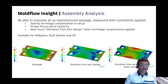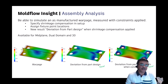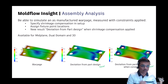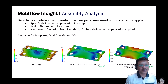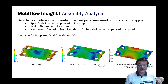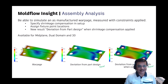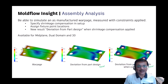This is available for mid-plane, dual domain, and 3D as well. Previously, and continuing still, you have the normal warpage plot where you apply an anchor plane — this is a combination of shrinkage and warpage — then apply shrinkage compensation and differentiate warpage and shrinkage from it. Now, with the assembly analysis checkbox enabled on the warpage page, you get a new plot called 'deviation from the part design.' Irrespective of whether you apply fixed constraints or fixation points, if you check assembly analysis you get the deviation from the part design, but of course you need to add the shrinkage compensation.